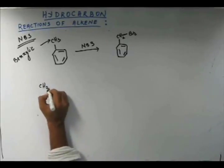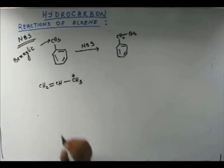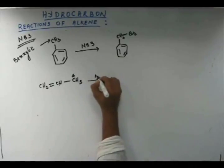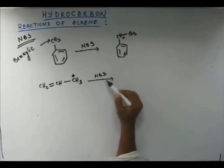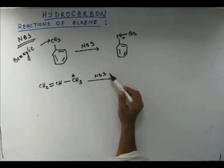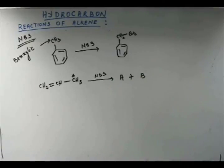Now let's solve a problem. Suppose I have propyne, and this is a starred carbon — starred carbon means it is an isotope of carbon — and I have given NBS. NBS alone can't do anything without other reaction conditions, but for convenience those are not written; they just write NBS. So the question is: I get A plus B. I have to identify what A and B are. How can we get two products?